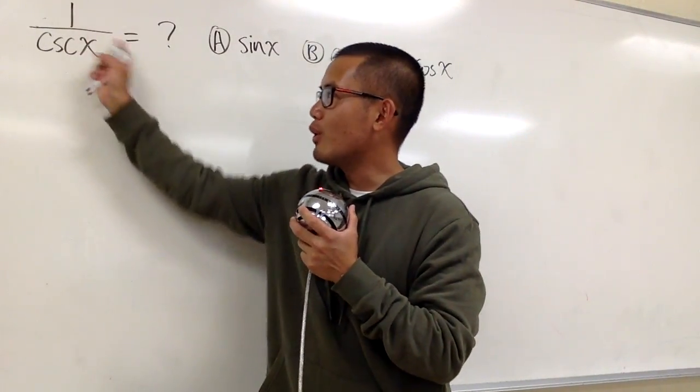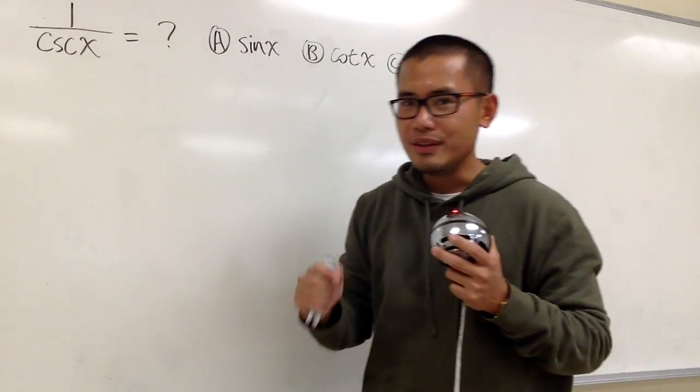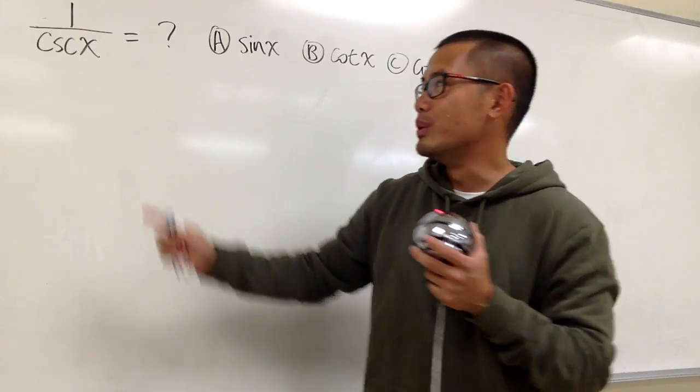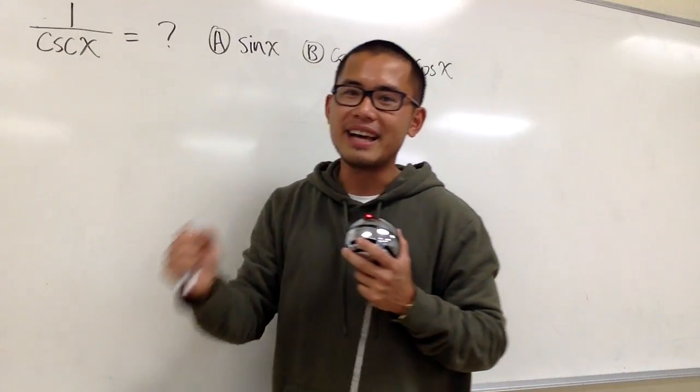Okay, this one we have 1 over cosecant x, and if you notice the identity right away, you know this is equal to sine x, right?